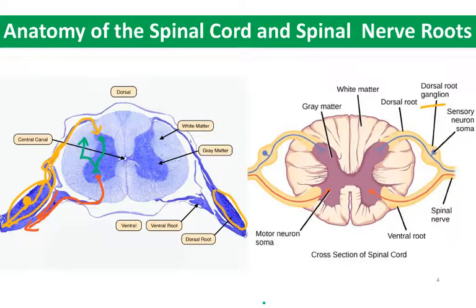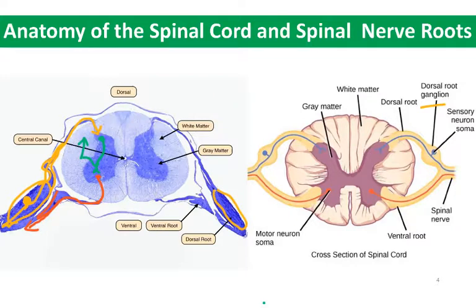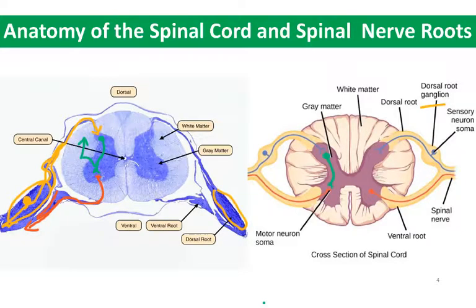In these two images the gray matter of the cord is drawn differently because we're looking at two slightly different areas of the spinal cord. The actual shape of the H or butterfly is different depending on whether you're in the cervical, thoracic, lumbar, or sacral cord. This pattern of innervation is really important to commit to memory because it forms the basis for reflexes.